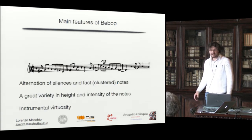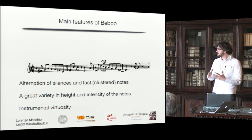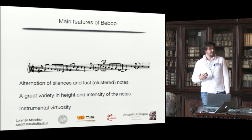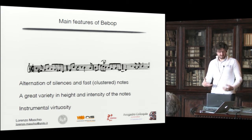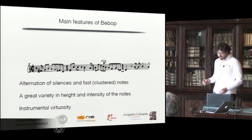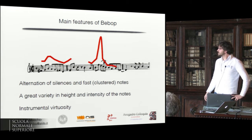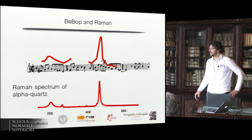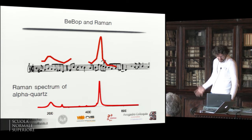The characteristics of bebop are that it is played very fast, with an alternation of silences and clustered notes. There is a great variety in the intensity the notes are played, and there is an instrument virtuosity for the players. I was playing electric bass myself and was playing this tune a few weeks ago, and I noticed that the profile of how the notes are displayed on a score could remind something I was also working on — the Raman spectrum of quartz. There can be a strong connection between these two very different fields.